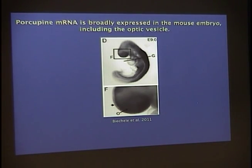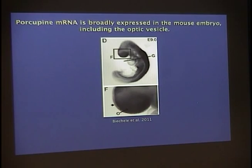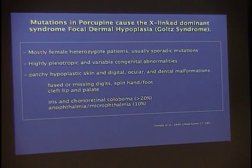This enzyme is broadly expressed in the early embryo, specifically in the eye, as shown here. Specific disruption is necessary, otherwise — and it has been shown — disruption of this gene leads to early disruption of mouse development.